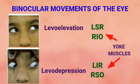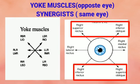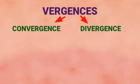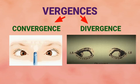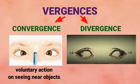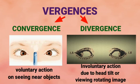In summary, binocular movements are produced by yoke muscles and monocular movements by synergistic muscles. The other type of binocular movement is vergences, of two types: convergence and divergence. In convergence there is inward rotation of both eyes from co-contraction of the two medial rectus muscles. In divergence there is co-contraction of the two lateral rectus muscles resulting in outward rotation of both eyes. Convergence is voluntary, produced when viewing a near object; divergence is involuntary, produced during head tilt or when viewing a rotating visual image.